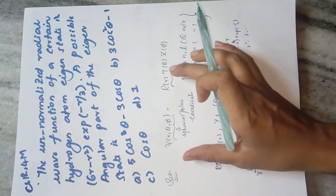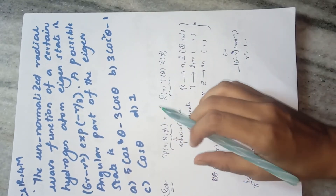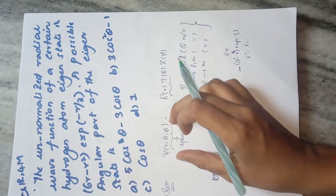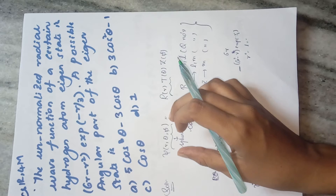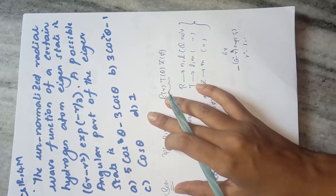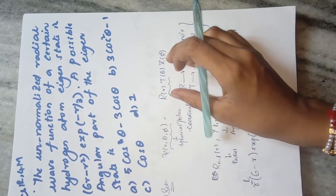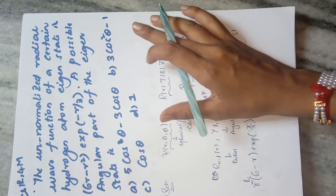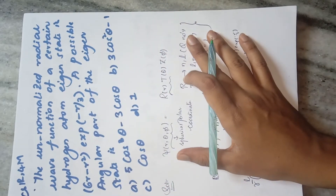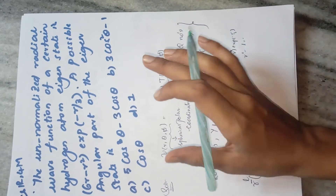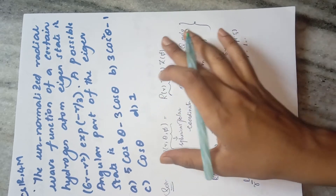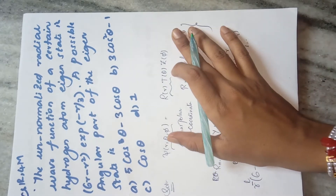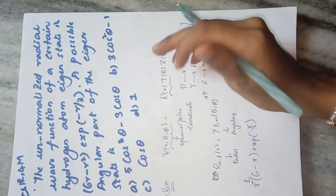Before we proceed, let's go over a few basics. If you are given ψ expressed in spherical polar coordinates r, θ, φ — the Schrödinger wave equation is better solved using spherical polar coordinates instead of Cartesian coordinates. The solution separates into three components: R(r), T(θ), and Z(φ). You don't need to know the full three-page derivation; I'll make it easy through a few key steps.